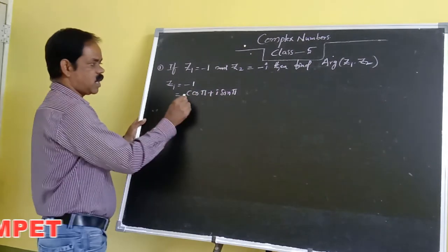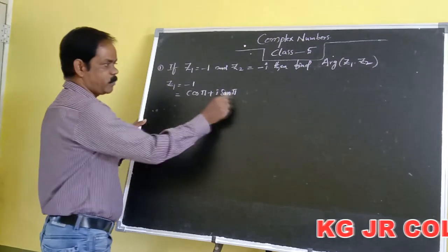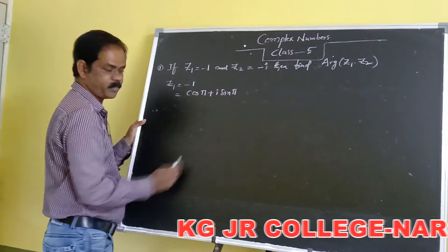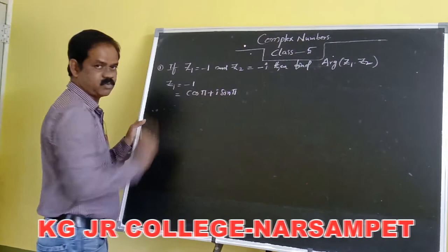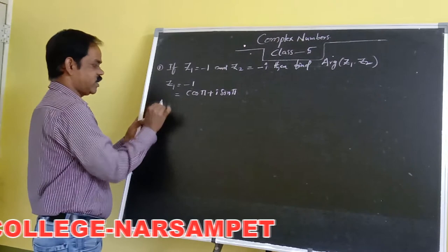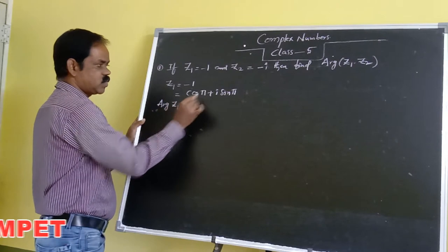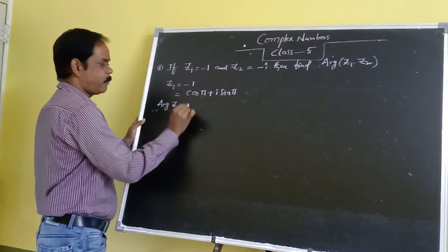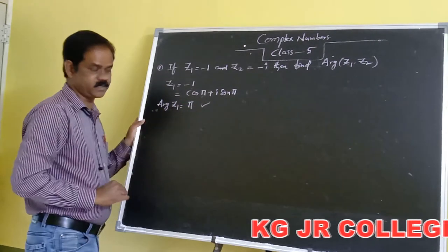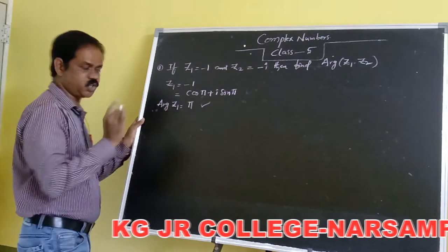Cos pi is equal to minus 1, sin pi is equal to 0, so the imaginary part is equal to 0. Therefore the argument of Z1 is equal to pi. First one is completed. Next we have Z2.